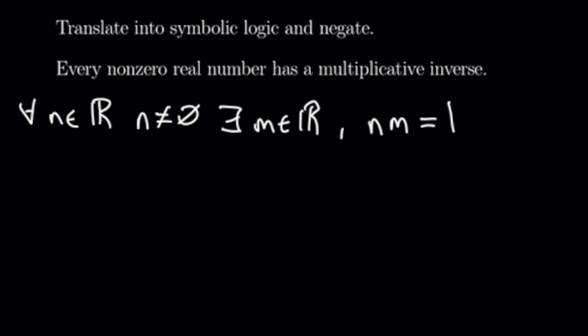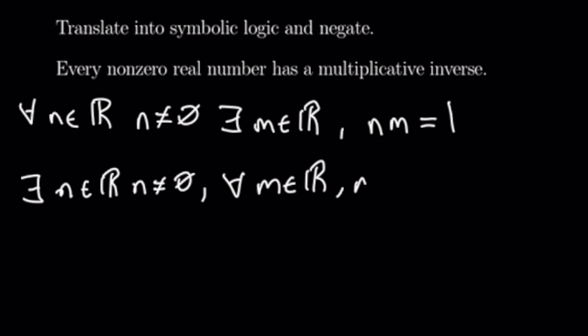So let's go ahead and negate this. We'll have: there exists a real number n with n not equal to zero, such that for all m in ℝ, n times m does not equal one. In other words, there exists a real number not equal to zero such that no matter what m you pick out of the reals, there is no multiplicative inverse for n.